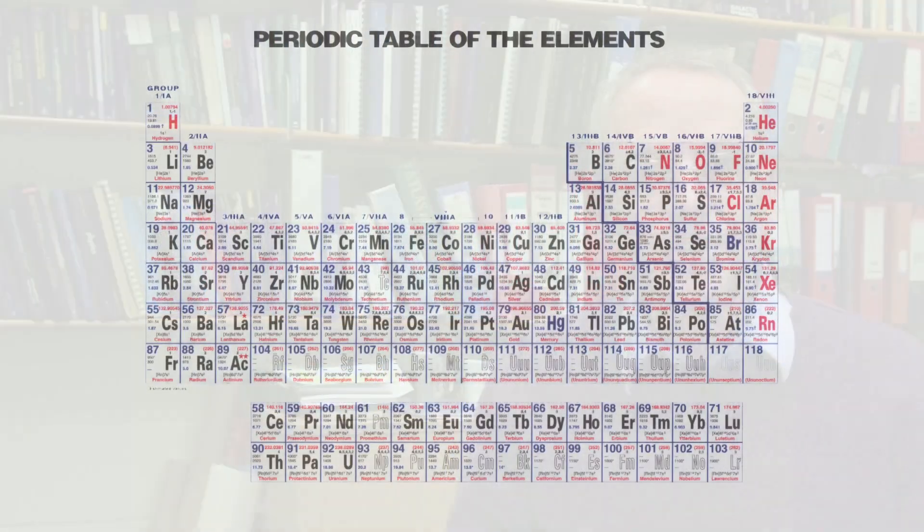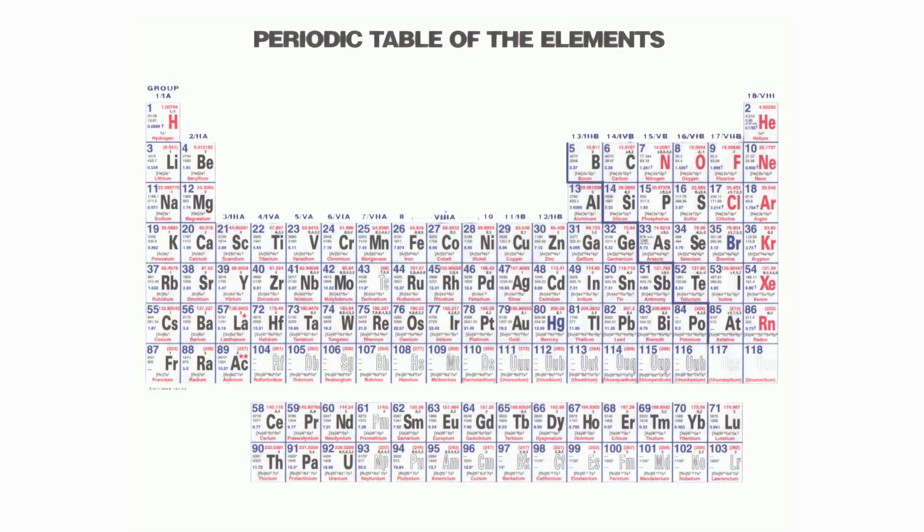I'm going to talk about where the chemical elements come from. If you want something close to a symbol, I'm going to talk about the R process and the S process. We're going to talk about chemical elements, which means I need to venture alarmingly close to chemistry and actually talk a little bit about the periodic table.